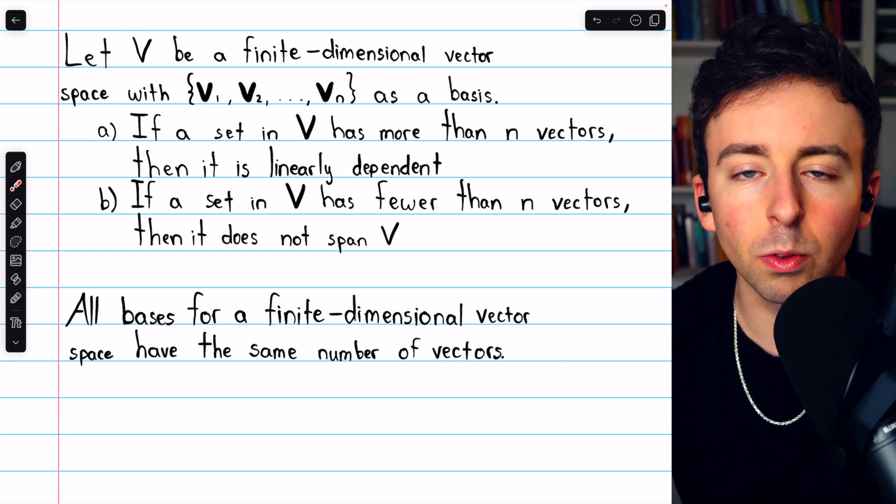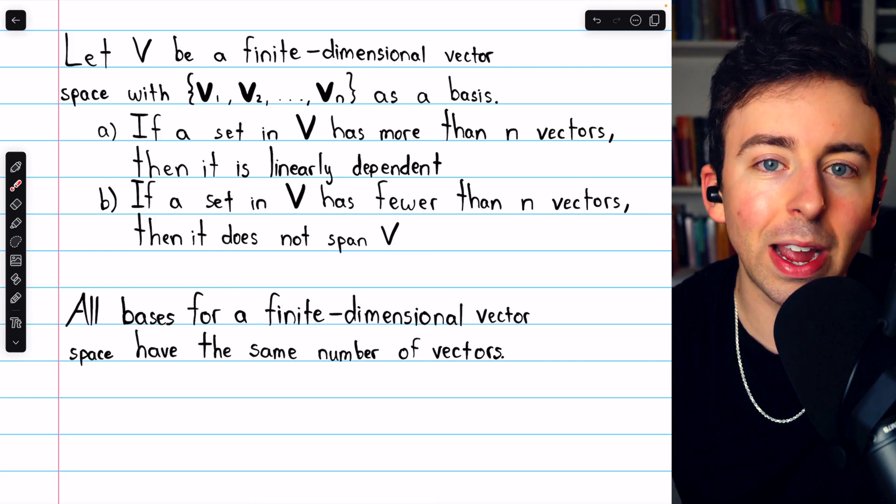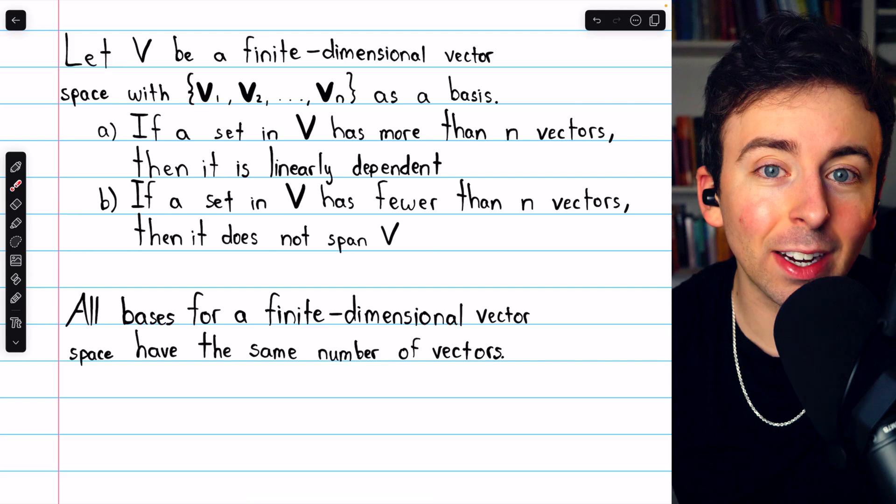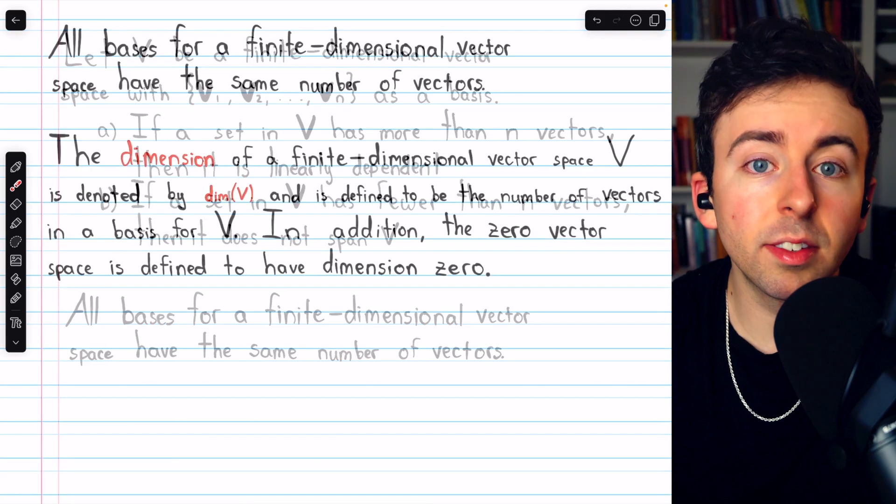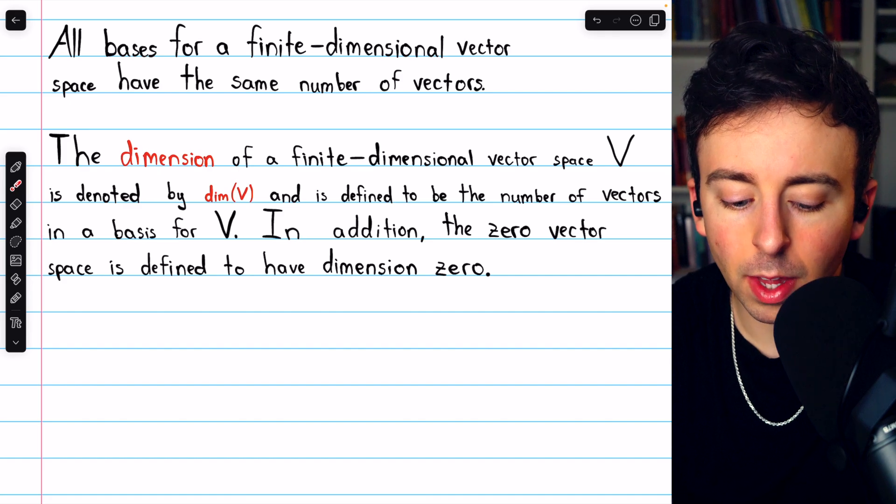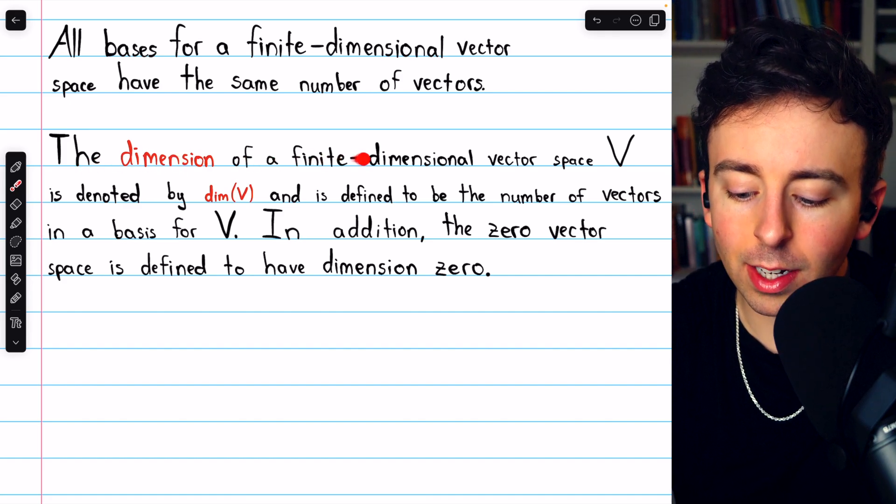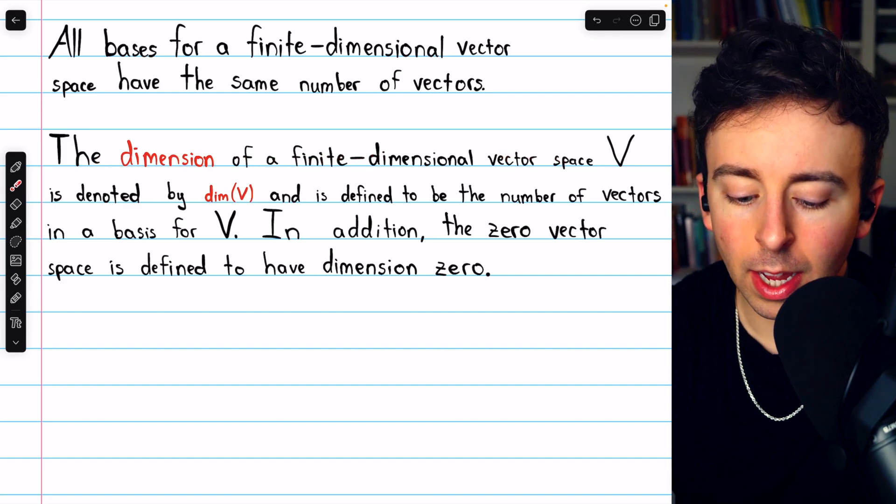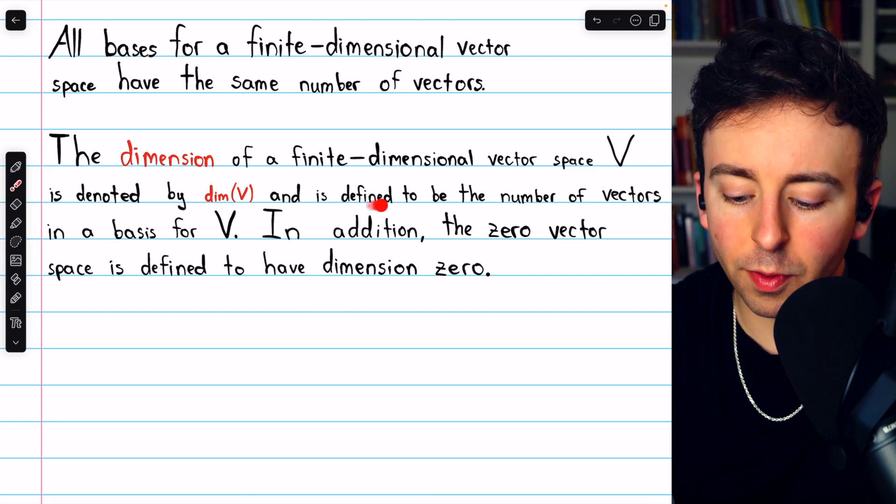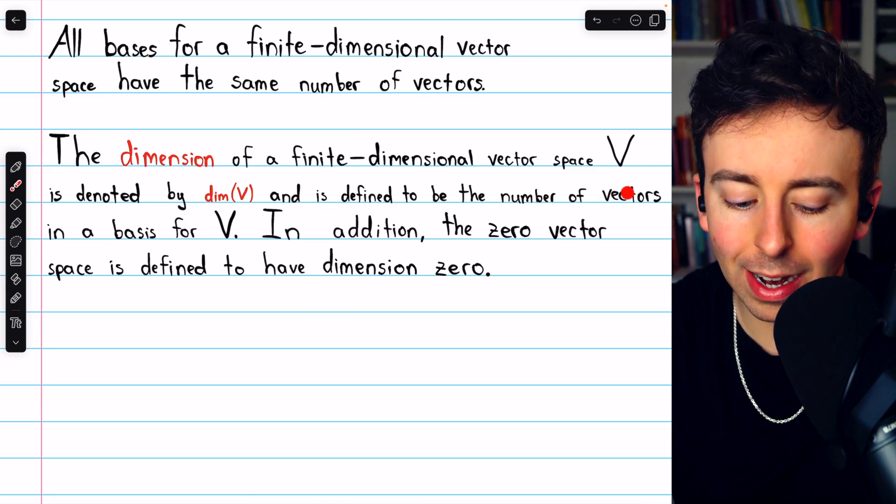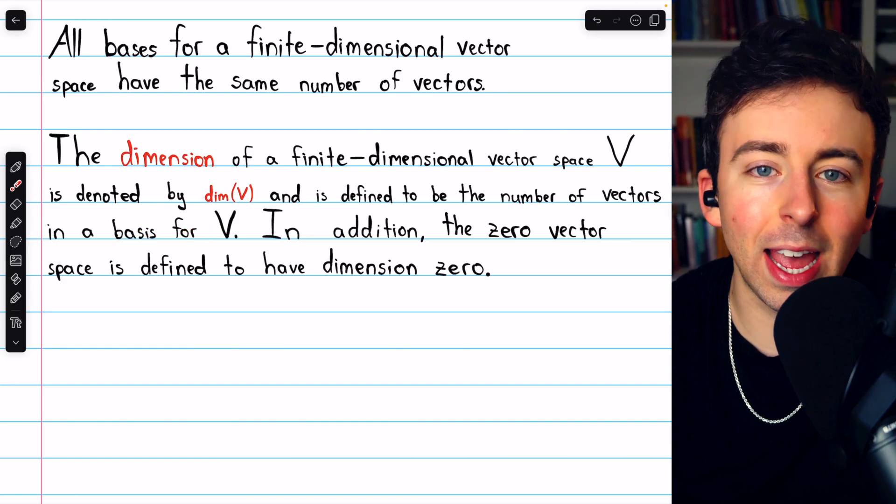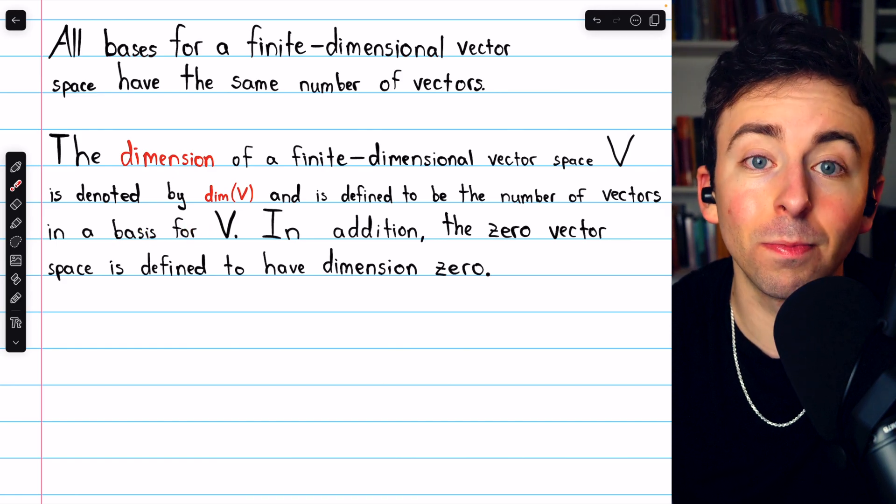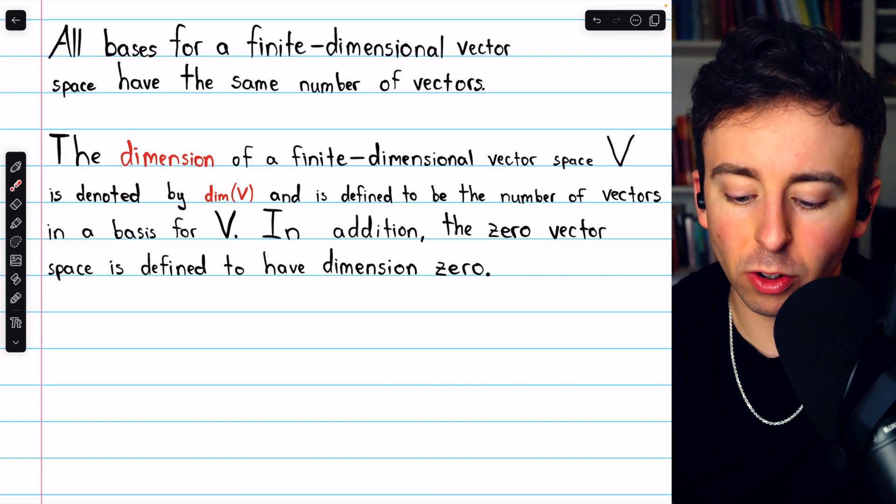Since every basis for a vector space has the same number of vectors, that number of vectors is a perfect candidate for the definition of dimension. And so here is our definition. The dimension of a finite-dimensional vector space V is denoted by dim(V), and is defined to be the number of vectors in a basis for V. No matter what basis we have, its number of vectors will be the same, and so that's the dimension of the space.